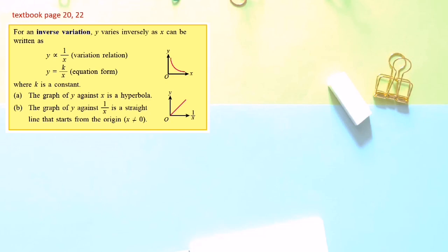After learning what inverse variation is and how to write it in equation form, let us learn how to draw the graph. The graph of y against s is a hyperbola. The graph of y against 1/s is a straight line that starts from the origin, where s ≠ 0. Why s ≠ 0? Because when we substitute s = 0, it becomes 1/0, and 1/0 is undefined.